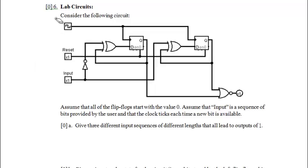Welcome to the sixth problem in the CS 121 2013 winter 2 final exam practice — this is lab circuits. Consider the following big nasty-looking circuit. Assume that all of the flip-flops start with the value 0, and that input is a sequence of bits provided by the user. The clock ticks each time a new bit is available on input, so when the user puts in a one, the clock ticks and we register that one, the circuit updates its state, and we move on to the next bit.